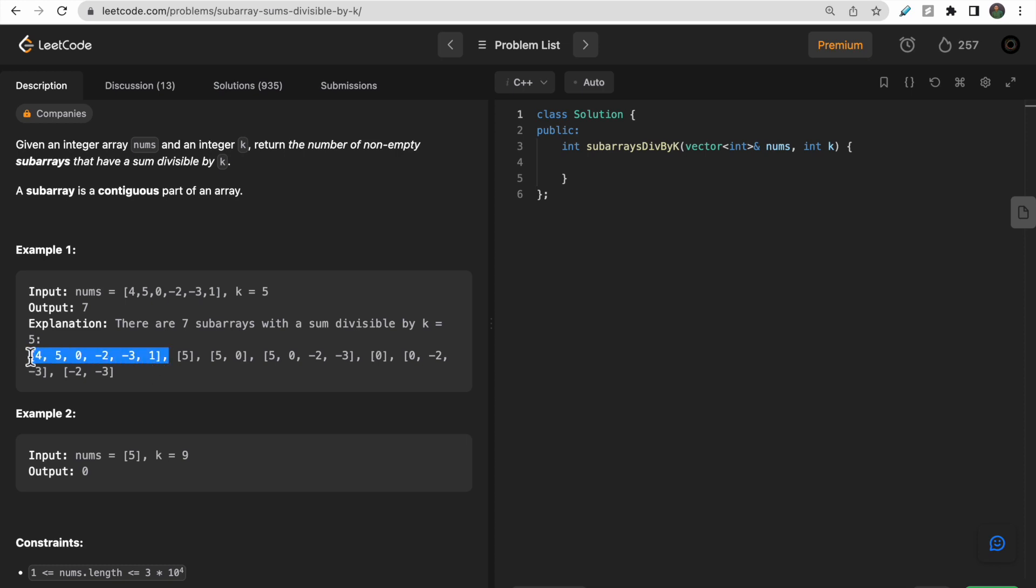So total sum of this subarray is 5. Similarly this is 5, this is also 5, this is 0, this is 0, this is -5 and this is also -5. Since 0 is also divisible by 5, if you find 0 modulus 5 then it will result 0. That's why here we have taken 0 as well and this -5 also. So these are all the different subarrays that are divisible by 5 and the total number of this subarrays is 7. So we return 7 here.